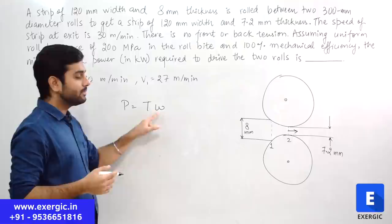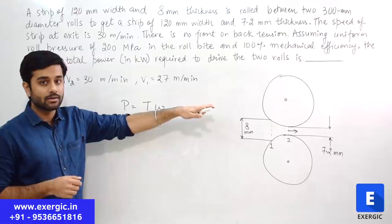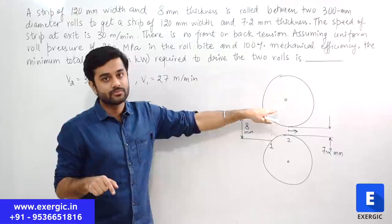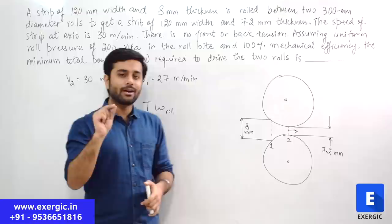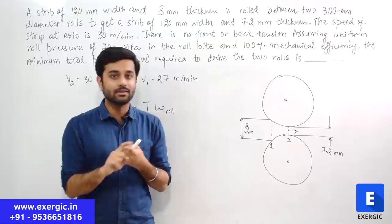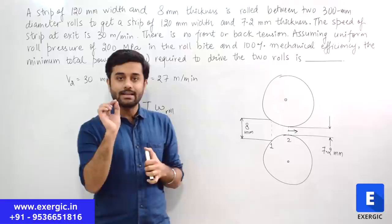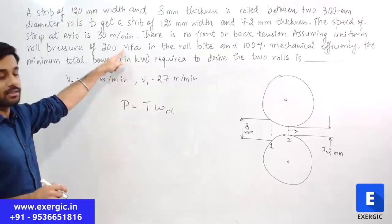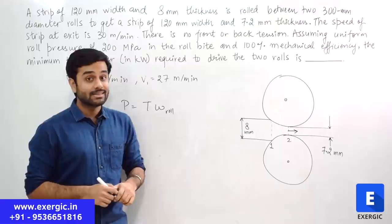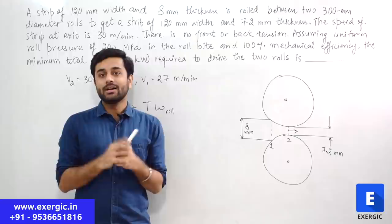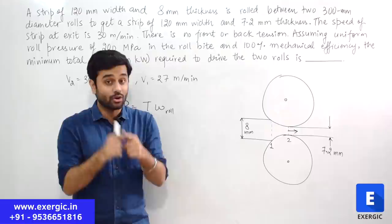To find the power for rotational motion, we use P = T × ω — torque multiplied by angular velocity of the roll. But notice the question has not given you the angular velocity, RPM, or any rotational speed of the roll. The only speed data given is the speed of the strip at exit, which is 30 m/min. Can you use that velocity to find the angular velocity of the roll? You cannot.